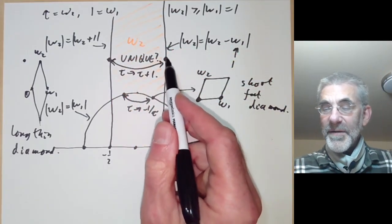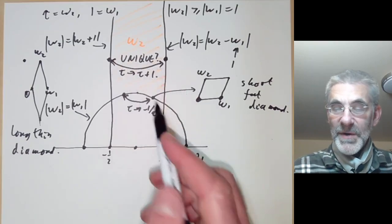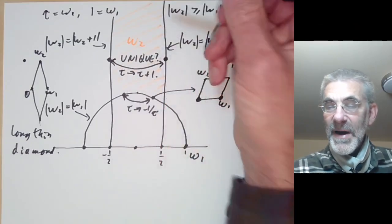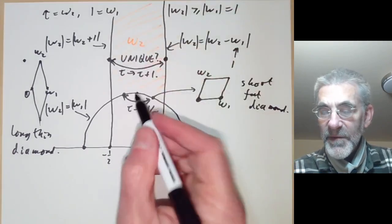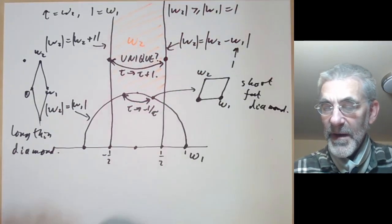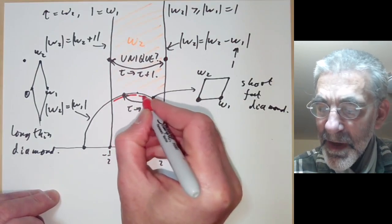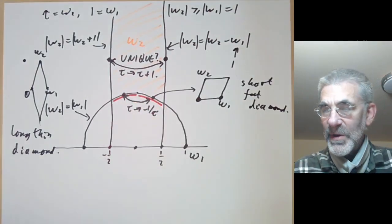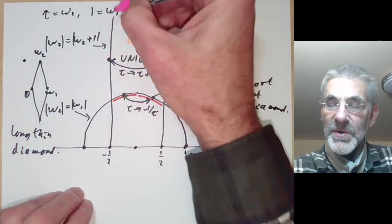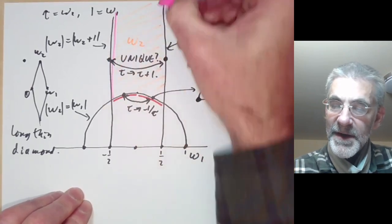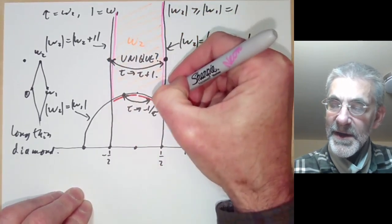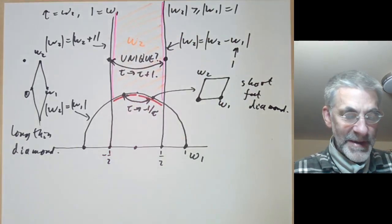And you can check that these are the only ambiguities. So the fundamental domain looks like this region except we have to remember to identify this bit with this bit by changing tau to minus 1 over tau, and we have to remember to identify the left hand side here with the right hand side here by changing tau to tau plus 1.